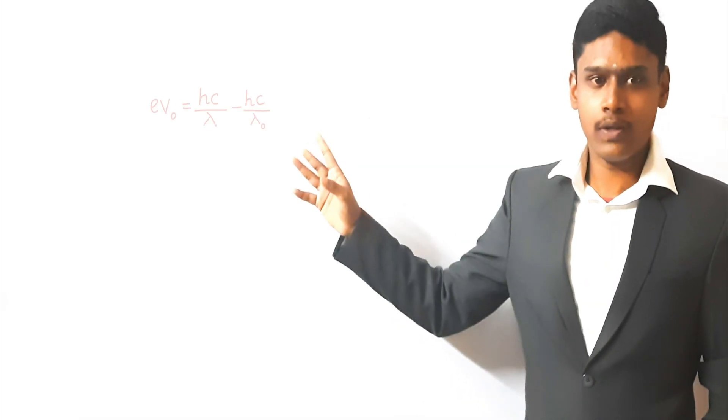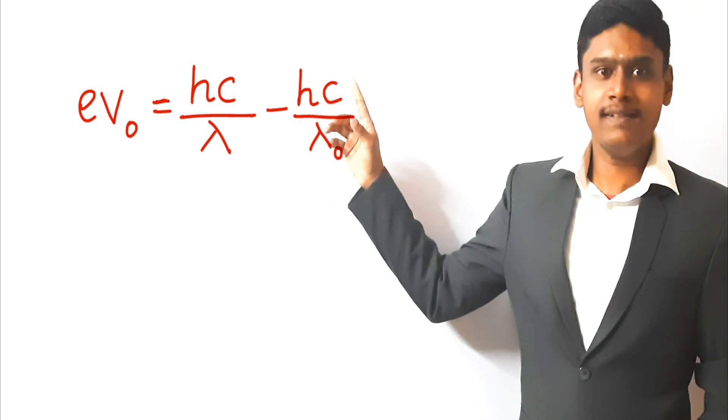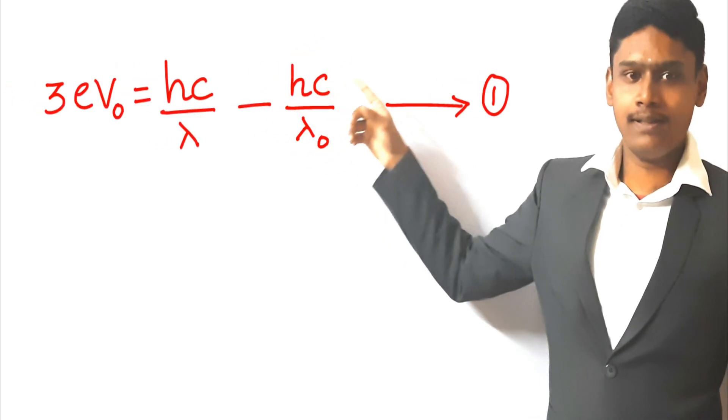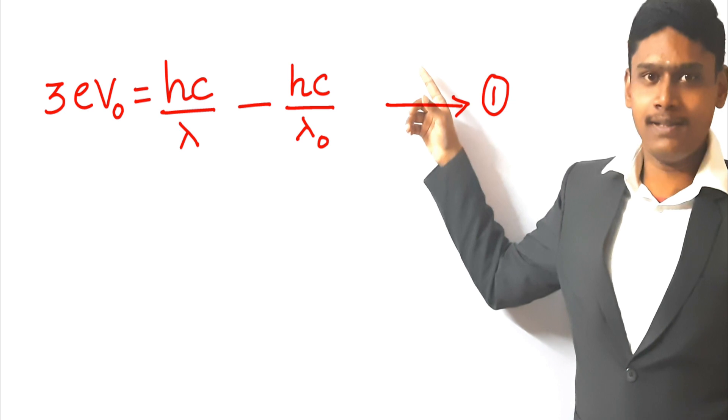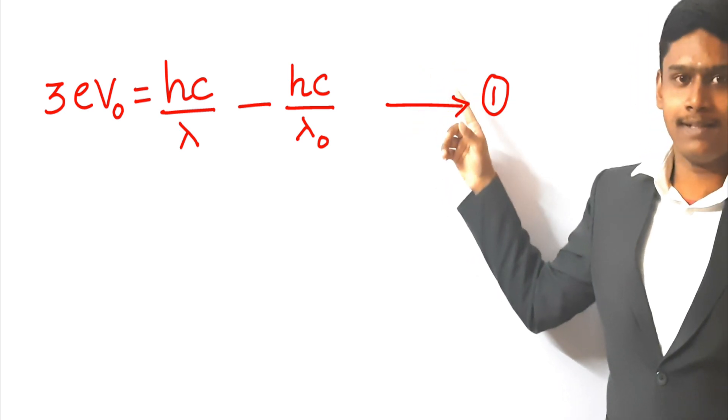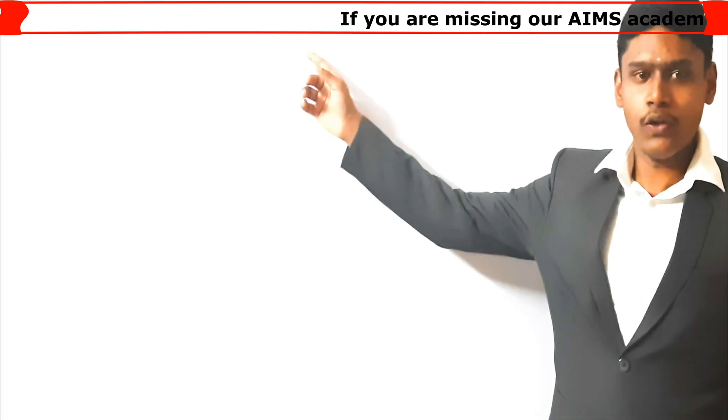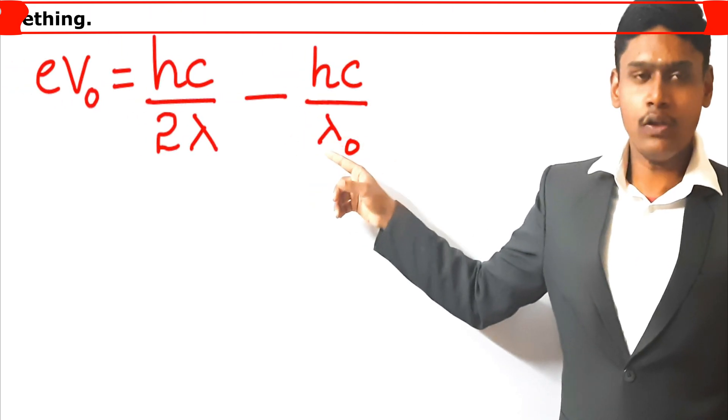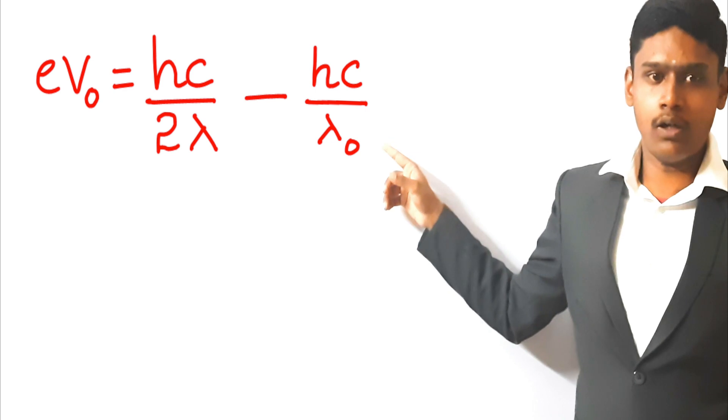The important formula for this question is: V0 is equal to hc by lambda minus hc by lambda 0. By substituting the first case in the formula, we will get 3V0 is equal to hc by lambda minus hc by lambda 0. Let us consider this as the first equation.